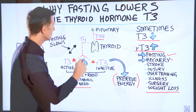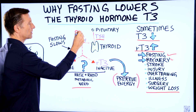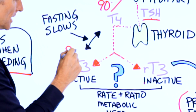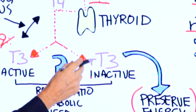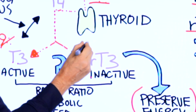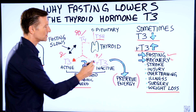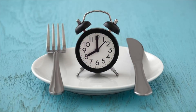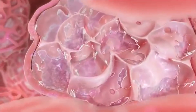T4 usually represents 90% of all the thyroid hormones. T3 represents about 9% of all the thyroid hormones. And reverse T3 usually represents about 0.9% — a very small amount. Because fasting slows the conversion from T4 to T3, it shifts output toward reverse T3.